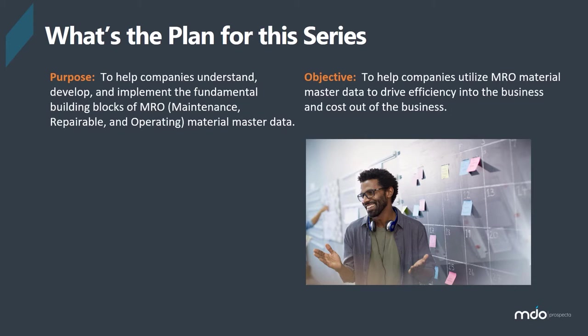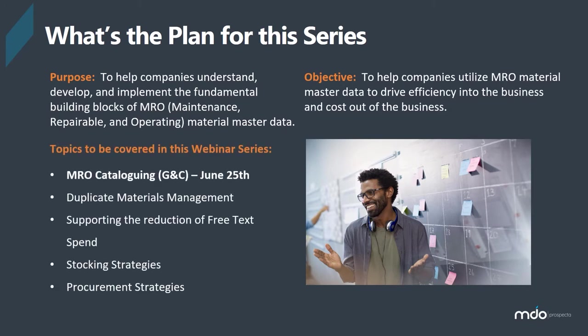In the mining world, MRO and spare parts are a very large portion of working capital. We spent a lot of time understanding these materials — their risks, criticality, what we need and what we don't — and driving inefficiencies out of the business through optimization. That all started from the catalog, the material master data. We've developed this series and welcome feedback. These are the things I've noticed through my journeys that are definitely impacting the environment.